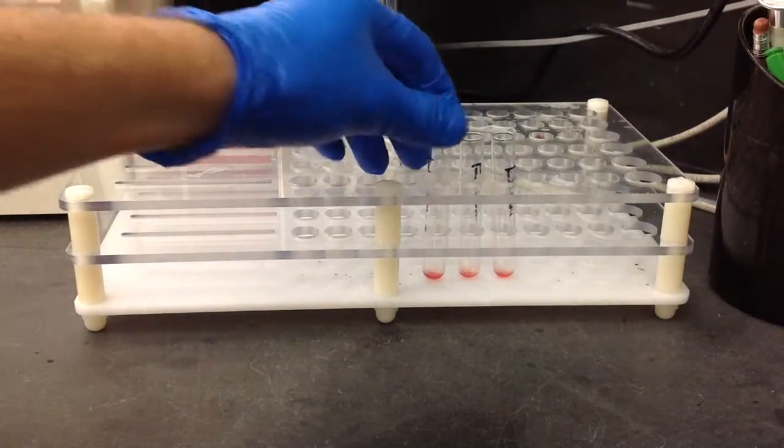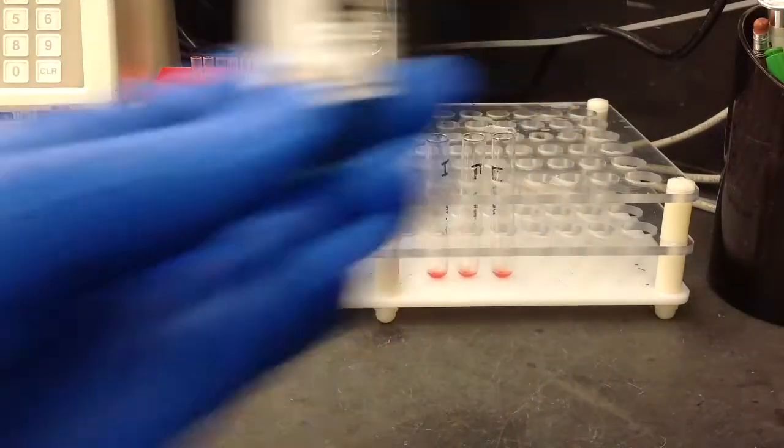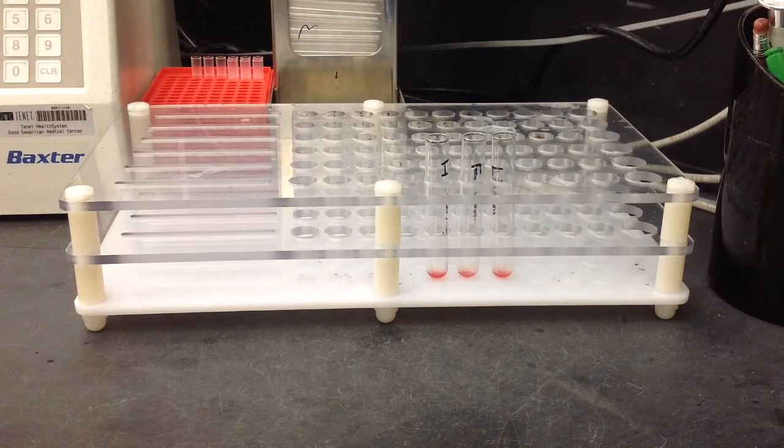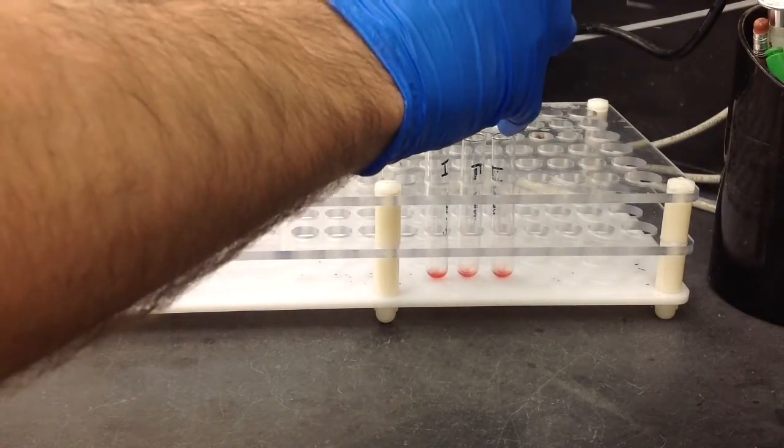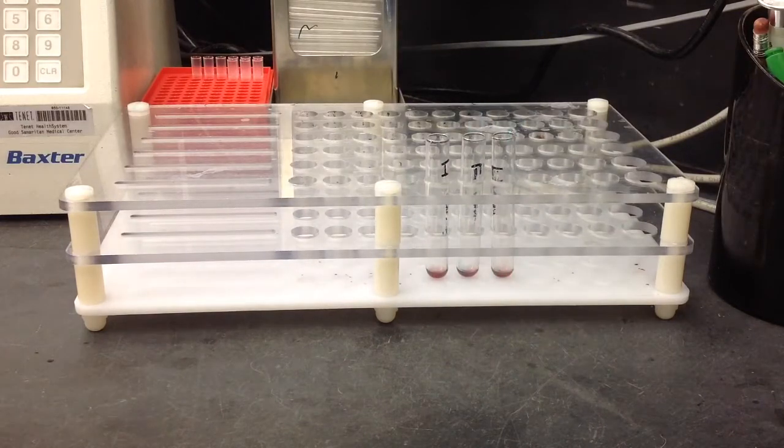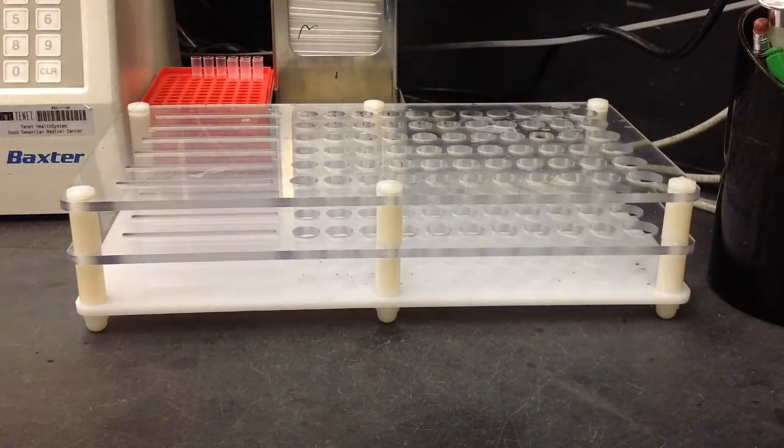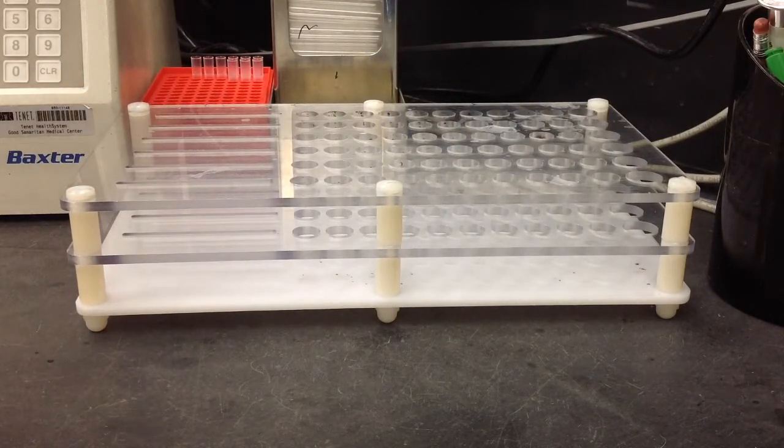So after you've done your three to four washes and your final decant, you're going to go ahead and you're going to add two drops of the AHG to each one of your screen cell tubes. And then you're just going ahead and you're going to centrifuge it for the normal amount of time that you would. Usually it's 20 seconds, but it might differ depending on the centrifuge you're using.